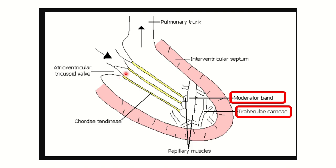Now looking at the cross-section of the right ventricle, we can see the tricuspid valve connecting to the papillary muscles via the chordae tendineae, which attach to the ventricular wall. The rough area here in the right ventricle is called the trabeculae carneae. A moderator band is also present. Both the trabeculae carneae and the moderator band are specific structures of the right ventricle.